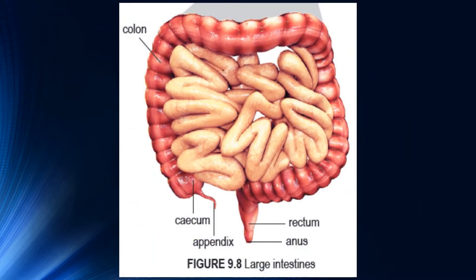Now we look at the diagram of our large intestine. Our large intestine consists of the colon. This part is the caecum, and this small part is our appendix. At the very end we have the rectum, and the last part of the large intestine is the anus.